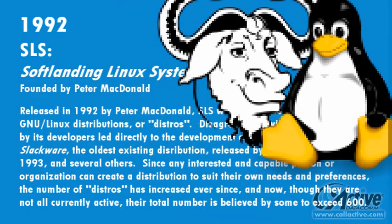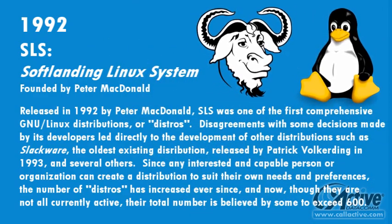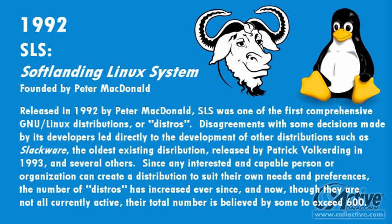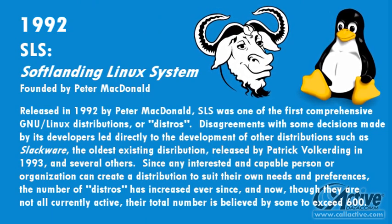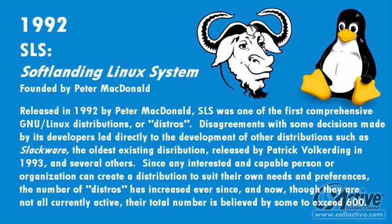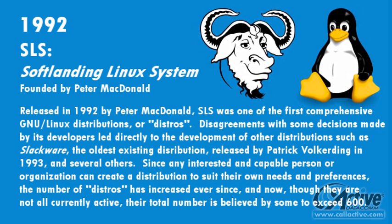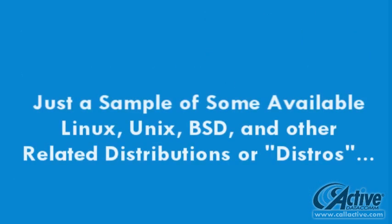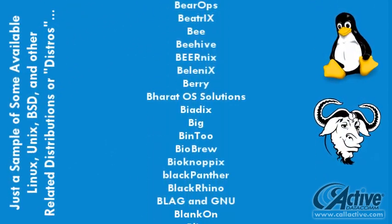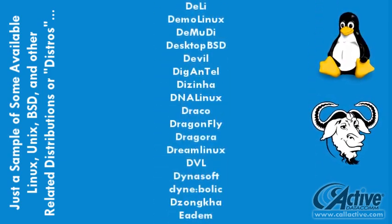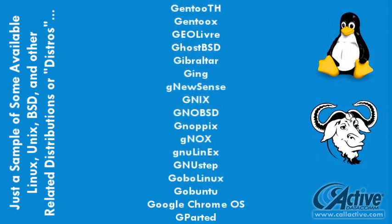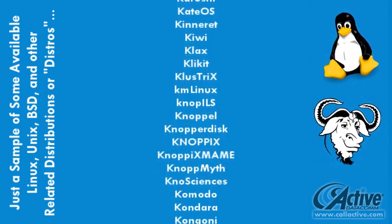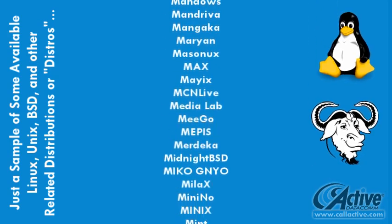Released in 1992, originally by Peter MacDonald, SLS was one of the first comprehensive GNU slash Linux distributions, or distros. Disagreements with some decisions made by SLS developers led directly to the development of other distributions, such as Slackware, the oldest existing distribution, released by Patrick Volkerding in 1993, and several others. Since anyone with the inclination and ability can create a custom distribution, the number of distros has increased ever since. The total number of distros is believed by some to exceed 600. Many distros have very specific uses and audiences, and some are not intended for live usage in production environments.